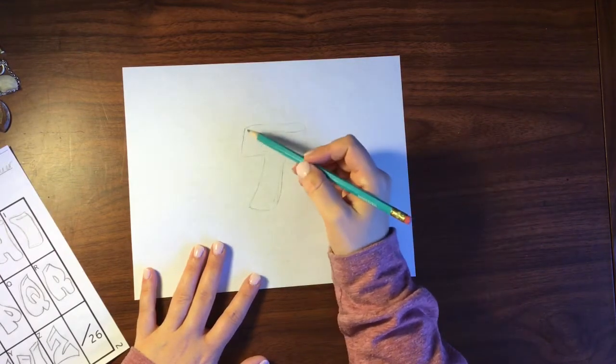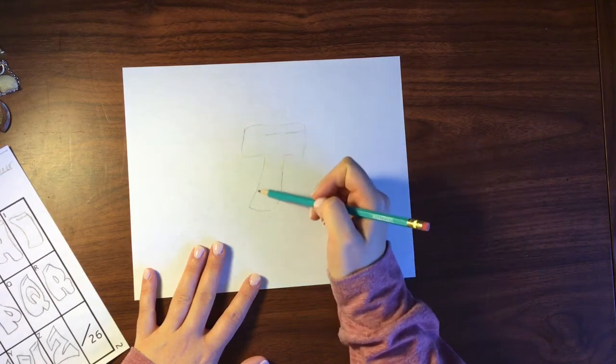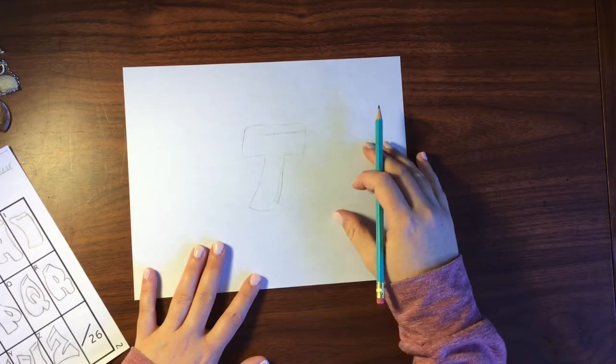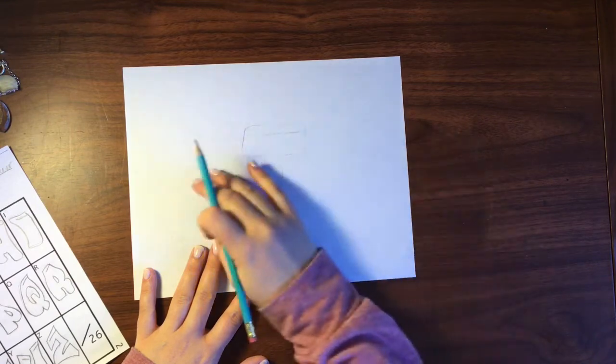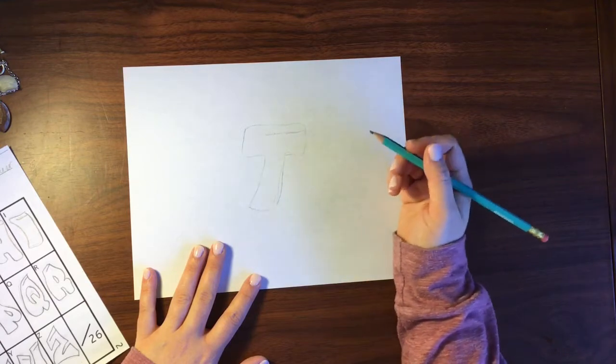You can tell that when I draw this I try to draw nice and light. I will go back once I have this all outlined. I will go back once I have all of my letters laid out and make all of my lines darker and more permanent looking.